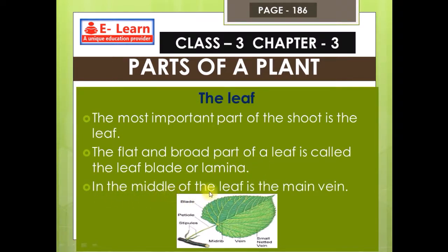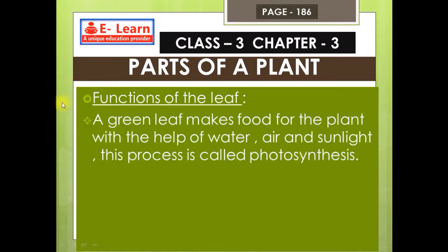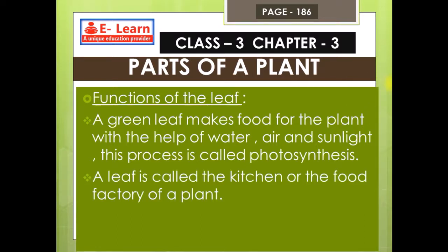In the middle of the leaf is the main vein. A green leaf makes food for the plant with the help of water, air and sunlight. This process is called photosynthesis. The leaf is called the kitchen or the food factory of a plant.